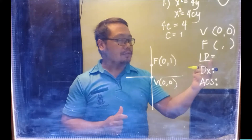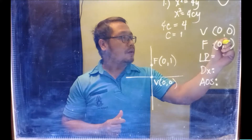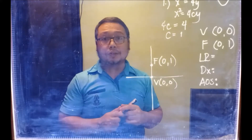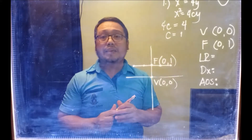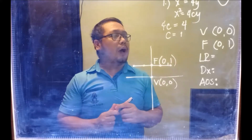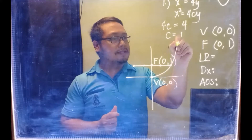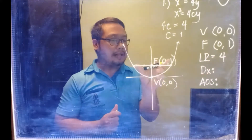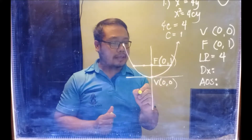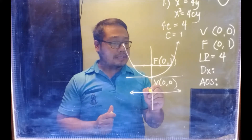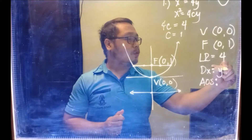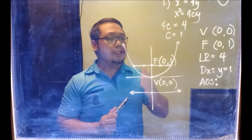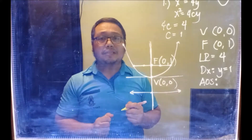The latus rectum is by definition equal to 4C. If C is 1, then 4C equals 4 — that is 4 units. This parabola opens upward, so our parabola looks like this. The directrix is simply the opposite of the latus rectum and also C units away from the vertex. The equation of our directrix is Y equals −1. Finally, to find the axis of symmetry, it is the line that cuts the parabola into two. That axis is the Y-axis, or X equals 0.